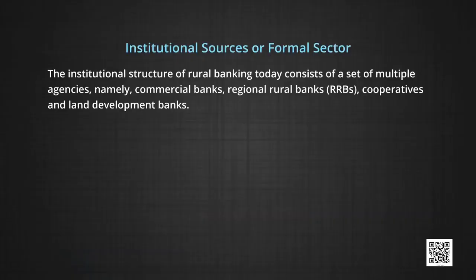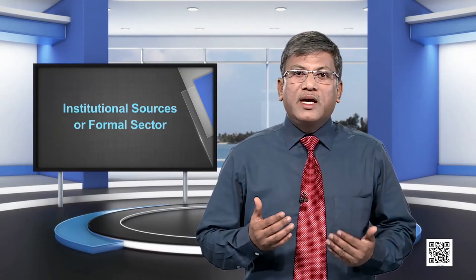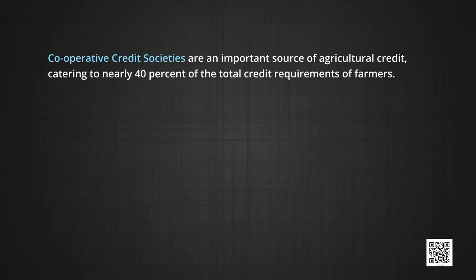Next, institutional sources or the formal sector credit. The institutional sources of rural banking today consist of multiple agencies: commercial banks, regional rural banks (RRBs), cooperatives and land development banks. They are expected to dispense adequate credit at cheaper rates. Recently, self-help groups (SHGs) have emerged to fill the gap in the formal credit system. The cooperative credit societies are an important source of agricultural credit, catering to nearly 40 percent of the total credit requirements of the farmers.